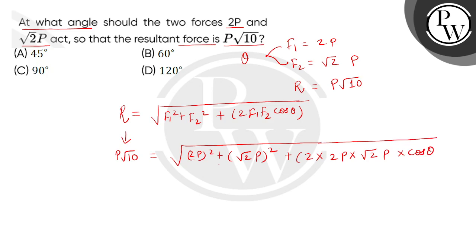Now when we take the square of both sides, we get on the left 10P square and on the right side we get 4P square plus 2P square plus 4 square root of 2P square cos theta.